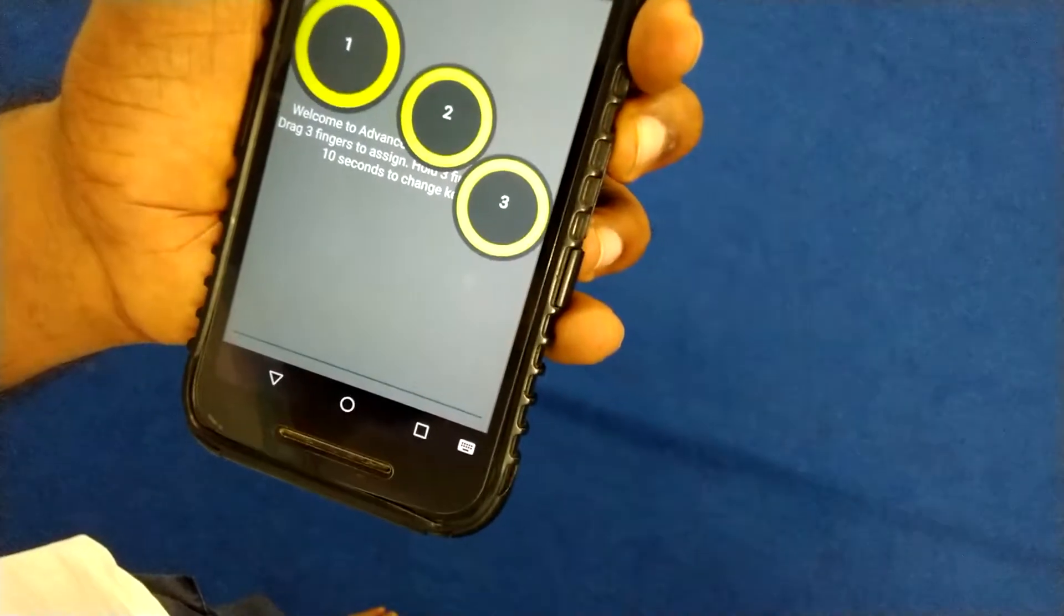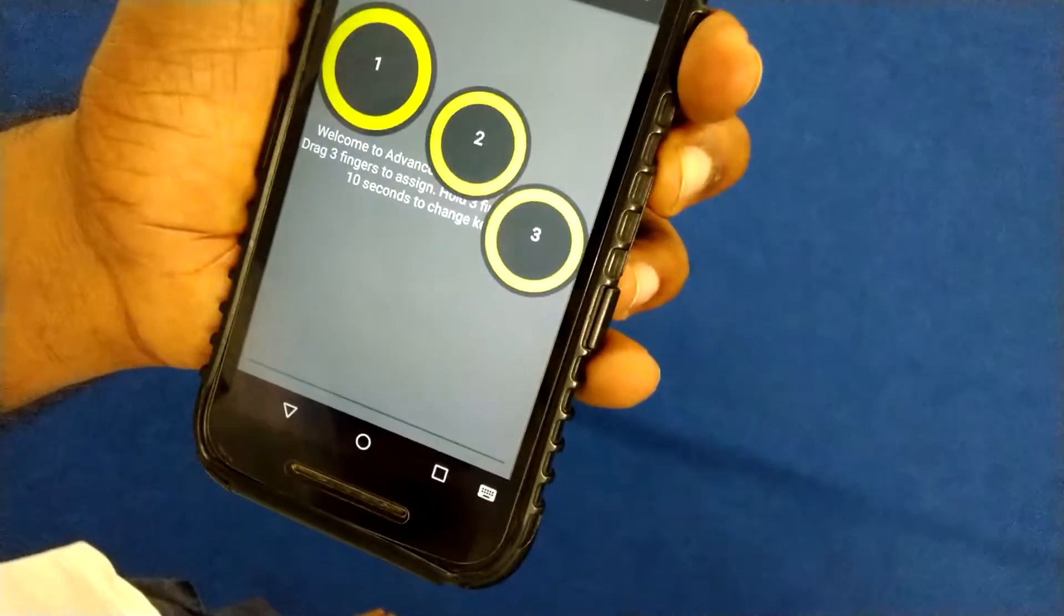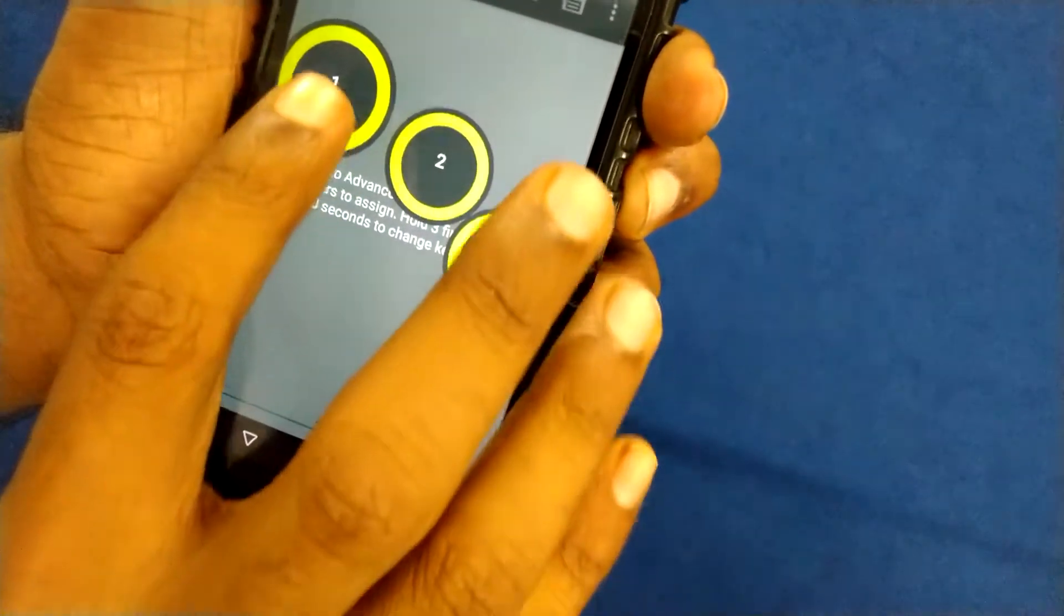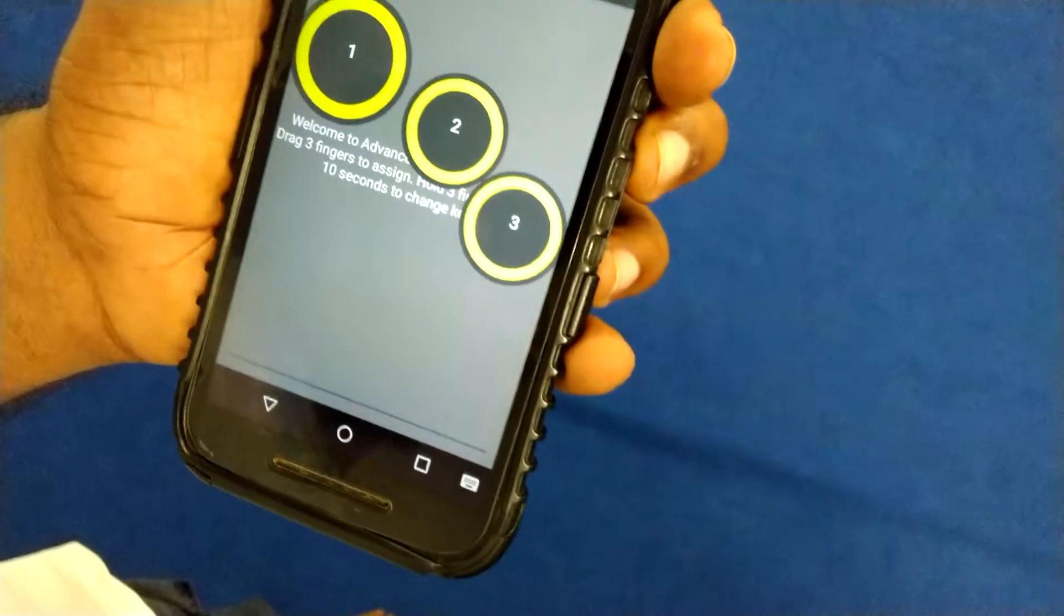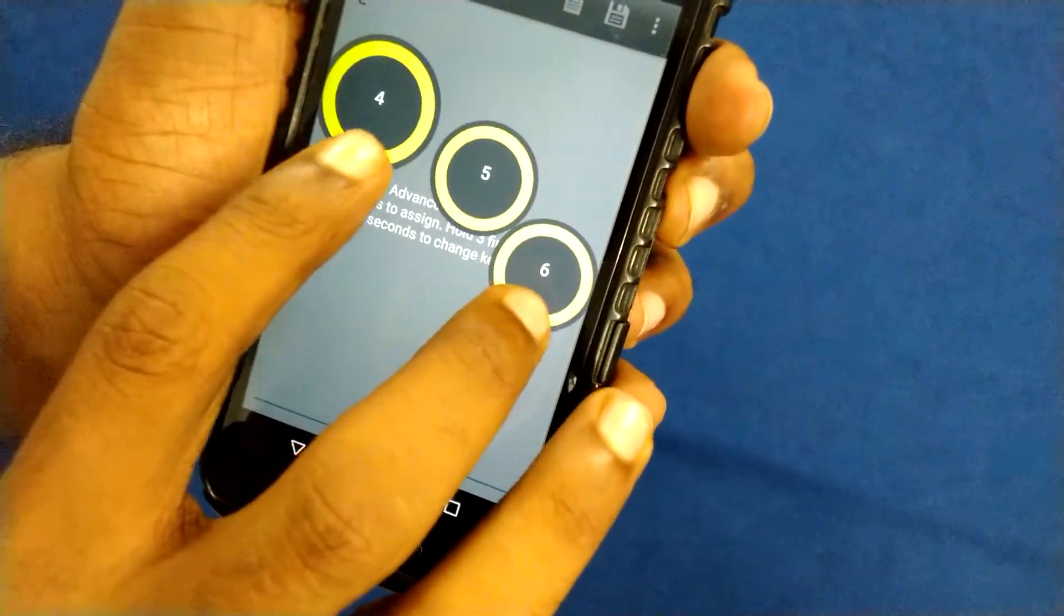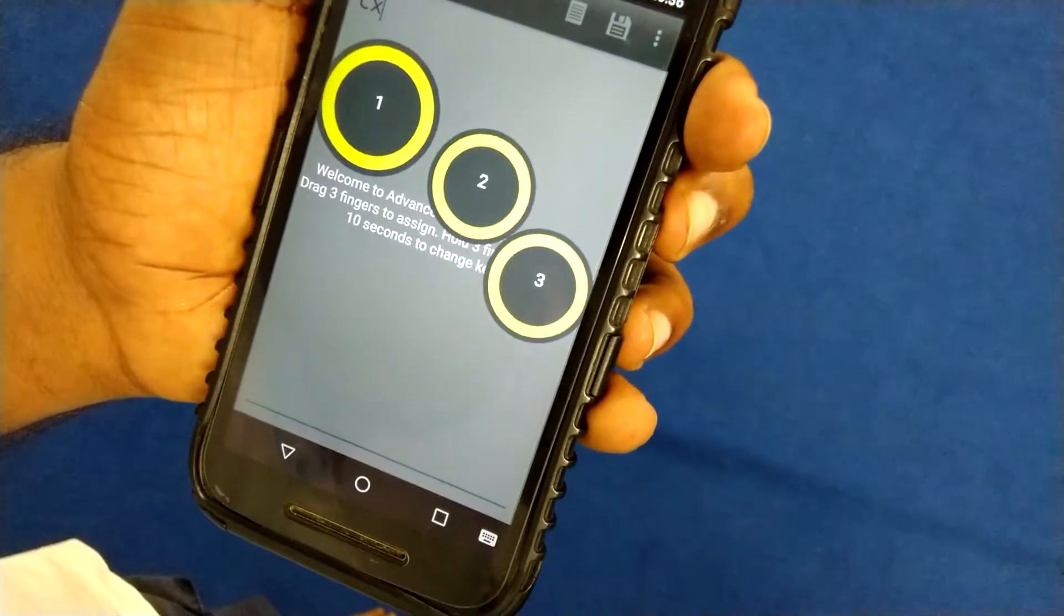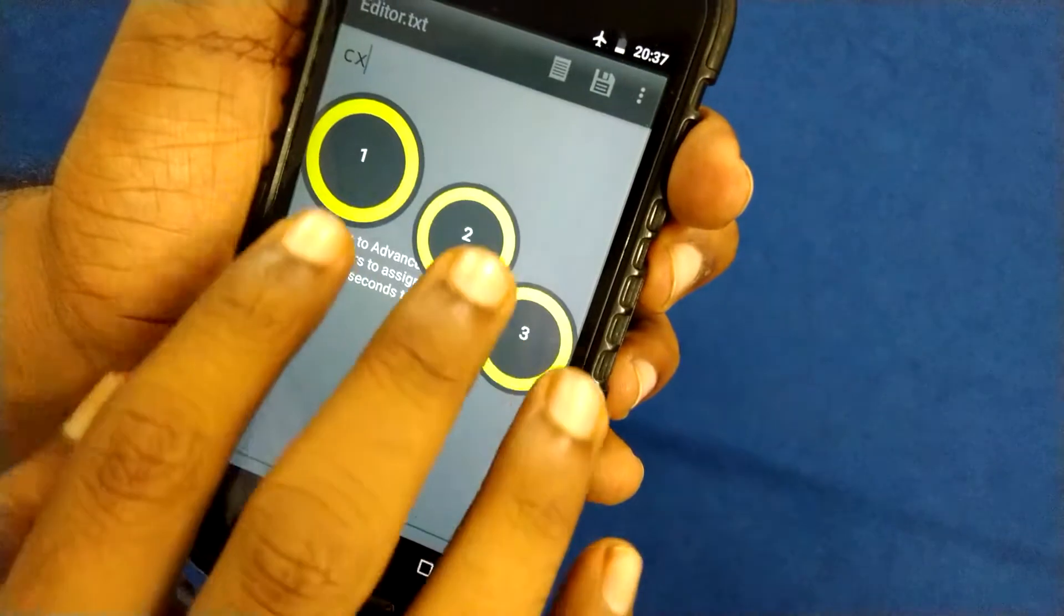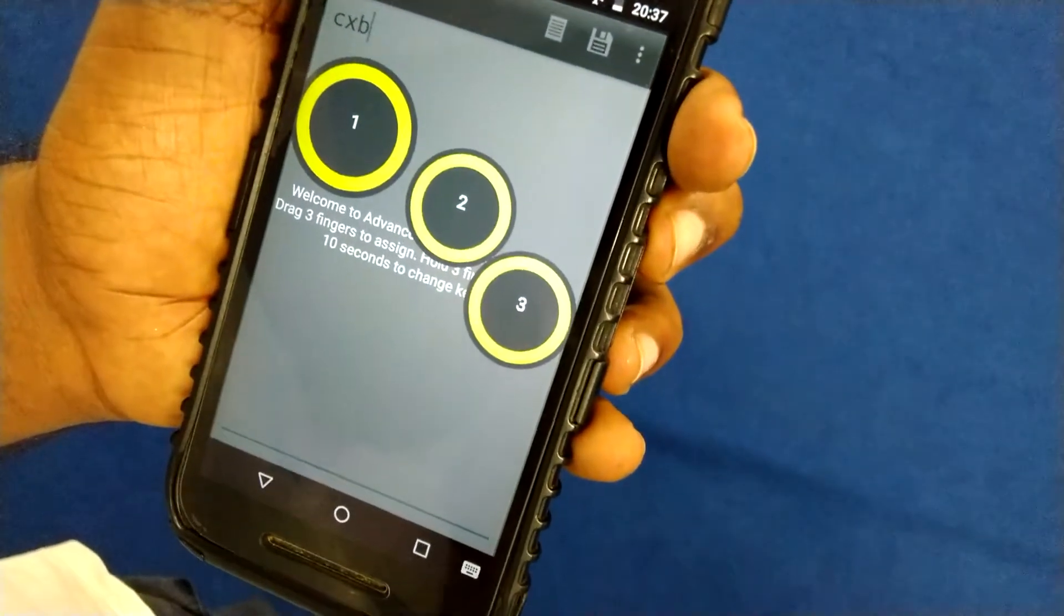Now let us type. Pressing dot one will produce 'uh'. Pressing dot one twice will produce letter C. English loaded. C. Okay. Pressing dot one and dot three twice will produce letter X. X. Okay. Pressing skip after simultaneously pressing dot one and dot two will produce letter B. B, dot B, B, B. Okay.